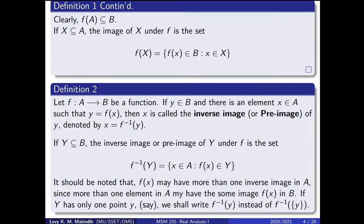If we have a set X which is a subset of set A, then the image of the set X under the function is defined as F of X — the set containing all elements F of X in B such that X is in the capital set X. The inverse image of a function undoes the process: whatever the function does, the inverse image reverses or undoes it.